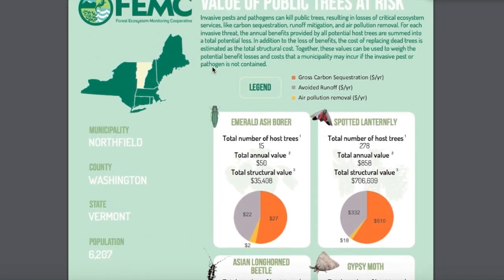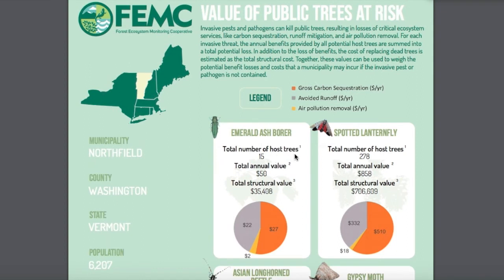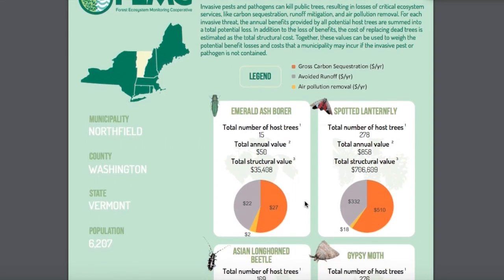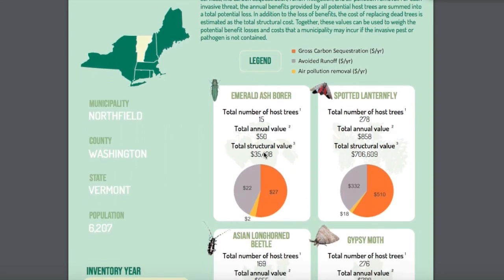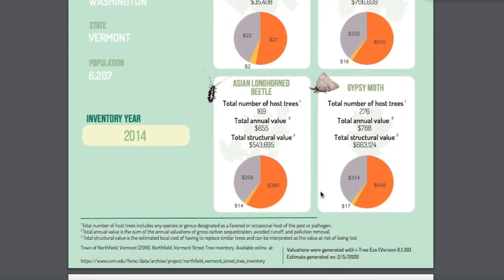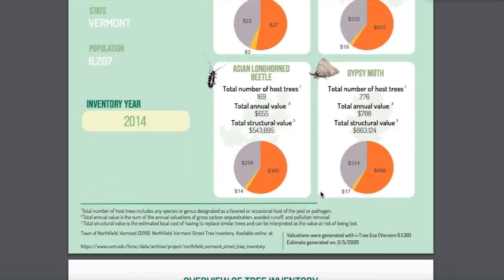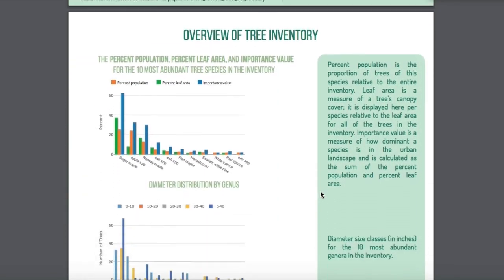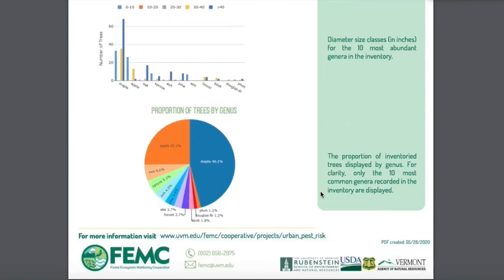For each invasive threat, the annual benefits provided by all potential host trees are summed into the total potential loss. In addition to the loss of benefits, the cost of replacing dead trees is estimated as the total structural cost. Together these values can be used to weigh the potential benefit losses and costs that a municipality may incur if the invasive pest or pathogen is not contained. This can be seen in the overview of tree inventory at the bottom of this page.